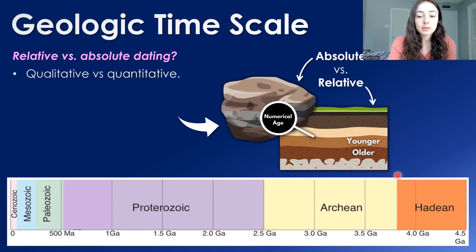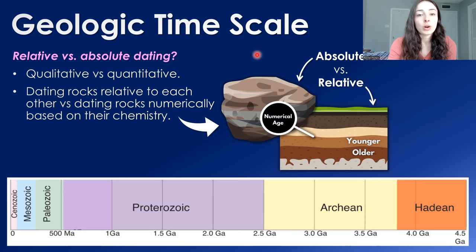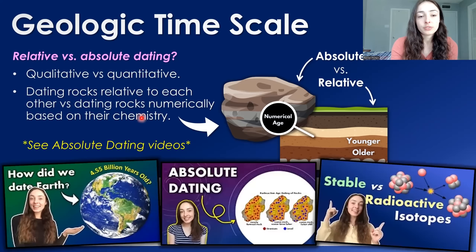For example, in this figure you can see that lower layers are typically older than upper layers, though there are intrusions and exceptions we'll cover later. Relative dating is dating rocks relative to each other, whereas absolute dating is dating rocks numerically based on their chemistry. I have other videos on absolute dating — I'll link one to the top right. There's also one on stable versus radioactive isotopes, and one about how we dated Earth.